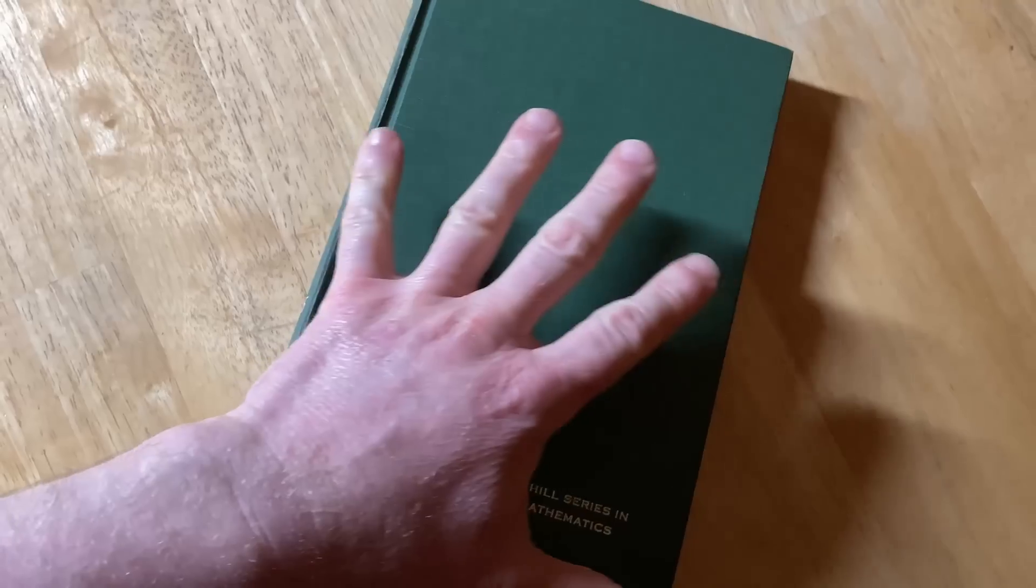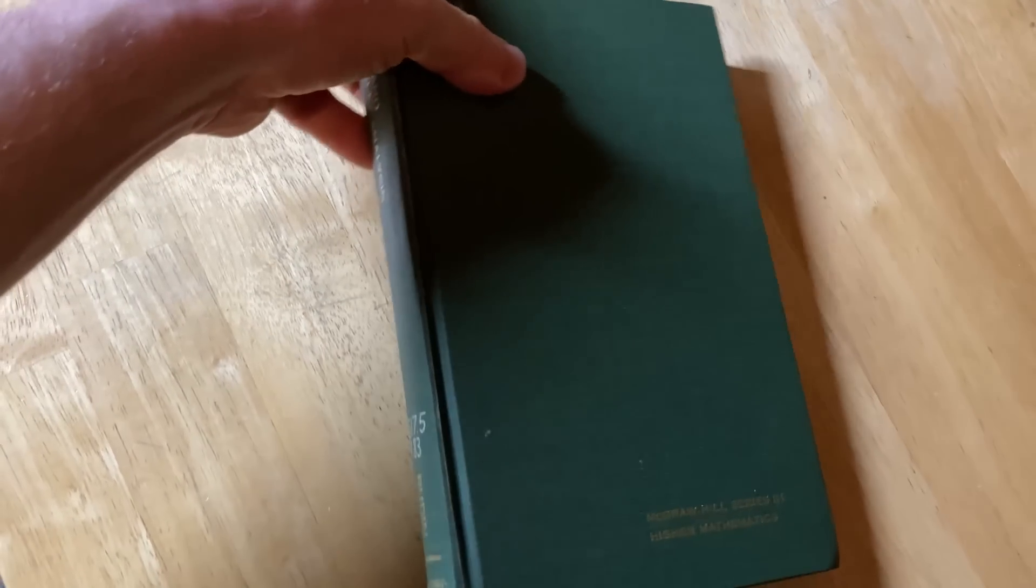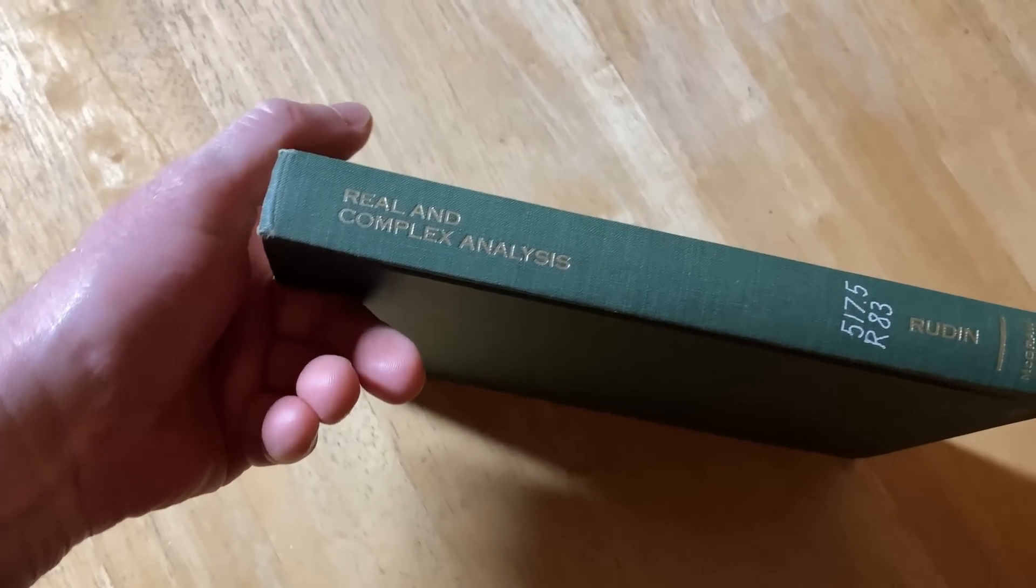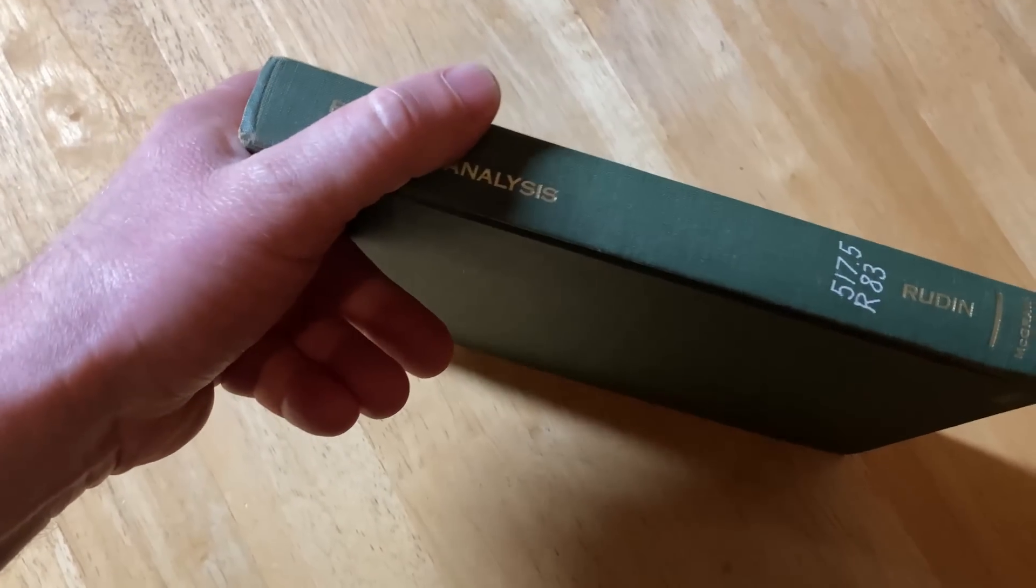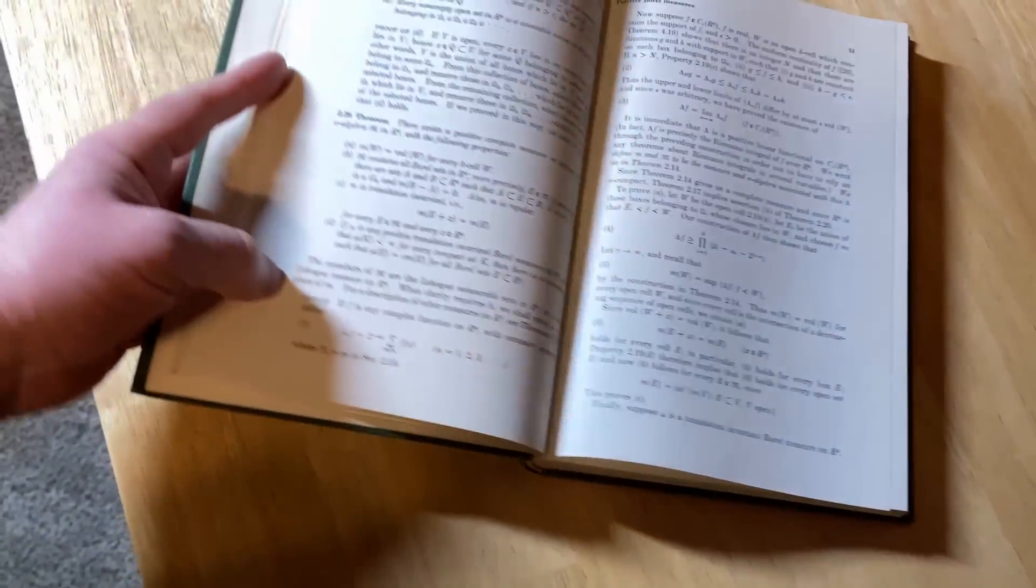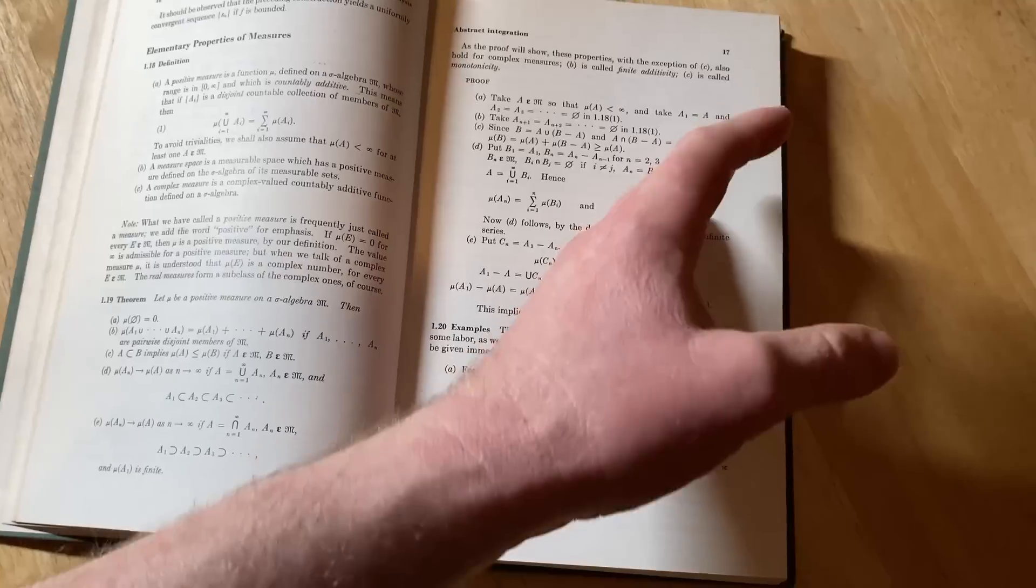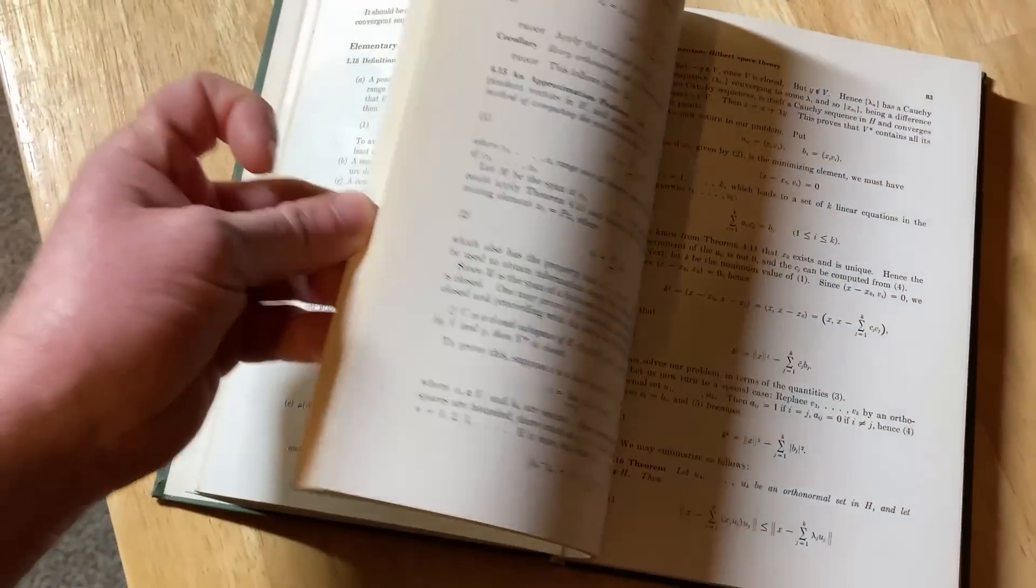So this book is used by graduate students typically in their first year and it's used for two semesters. In the U.S., most grad students will take a full year of mathematical analysis. So that's about 18 weeks for the first course and 18 weeks for the second course, like a fall and spring semester. That's typically how it works in colleges. So very high level. It requires a lot of knowledge.